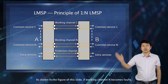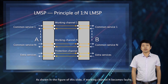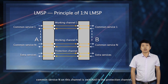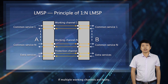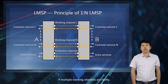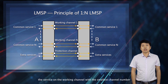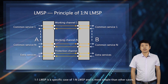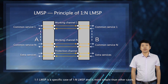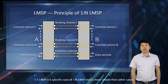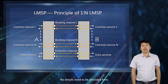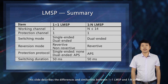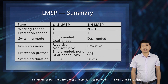As shown in the figure of this slide, if working channel N becomes faulty, common service N on this channel is switched to the protection channel and the extra service is interrupted. If multiple working channels are faulty, the service on the working channel with the smallest channel number is preferentially switched to the protection channel. 1-to-1 LMSP is a specific case of 1-to-N LMSP and is simpler than other cases.